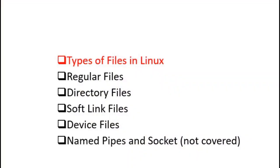Linux supports several different types of files such as regular files, directory files, soft link files, and two types of special device files referred to as block and character device files. In addition, there are two more special file types called named pipes and sockets that Linux processes use for mutual communication. These file types are not discussed in this video.